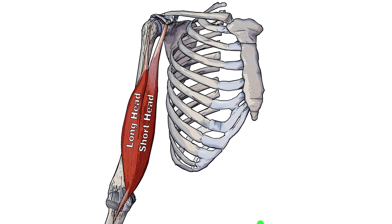Here we can see the biceps brachii muscle. You can see the long head right here, and a good way to remember which side the long head is on is that it's the most lateral side — L for lateral, L for long. The short head is closest to the stomach, so S for short, S for stomach. That's going to help you remember which side these two heads are on.